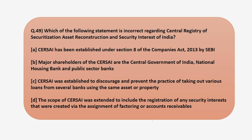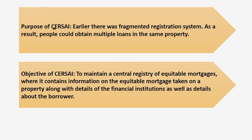Which of the following statements is incorrect regarding Central Registry of Securitization, Asset Reconstruction and Security Interest of India — abbreviated as CERSAI? Four statements have been given and you have to tell me which one is incorrect. Before reading the statements, let's have a brief discussion on what CERSAI means and how it benefits people. In India, before the formation of CERSAI, information on the encumbrance on a property was known only to the borrower and lender due to the fragmented registration system. As a result, people could obtain multiple loans on the same property.